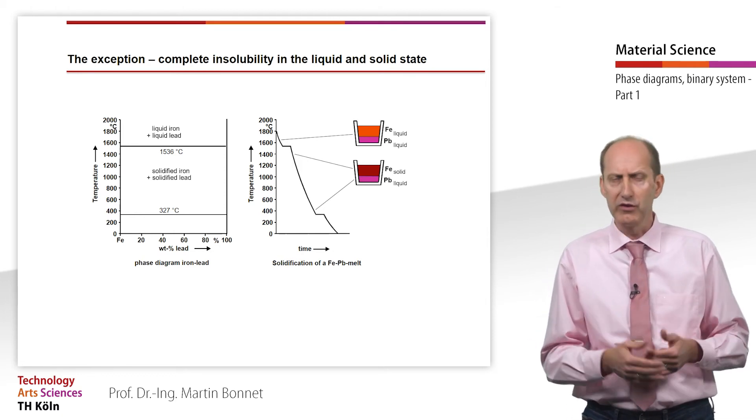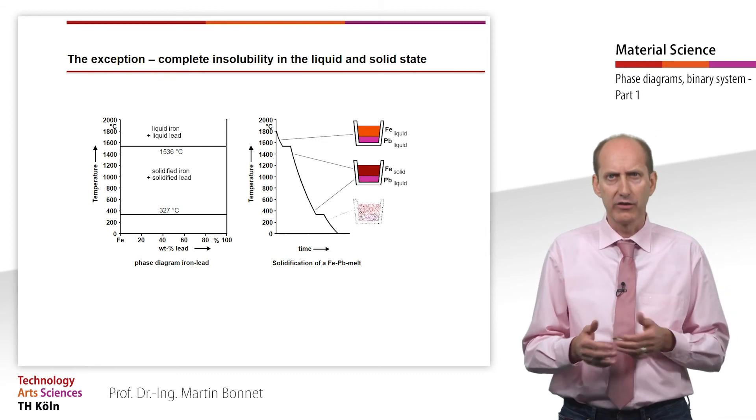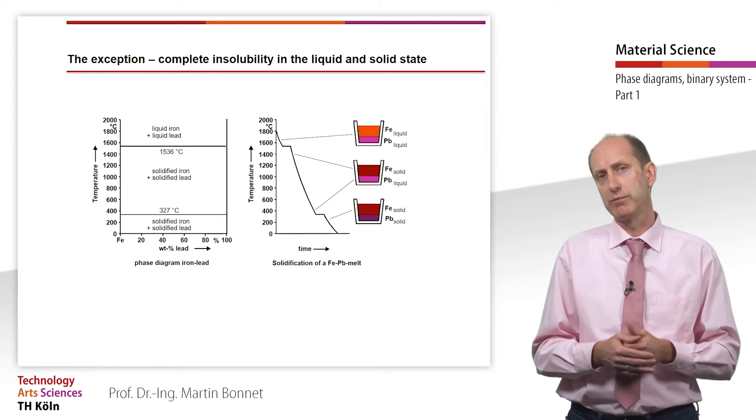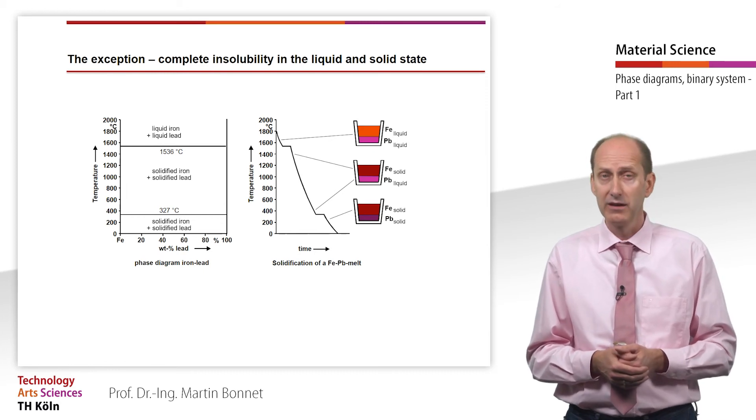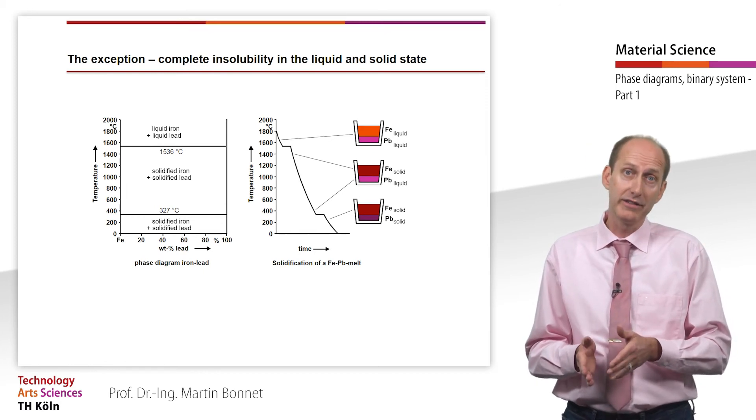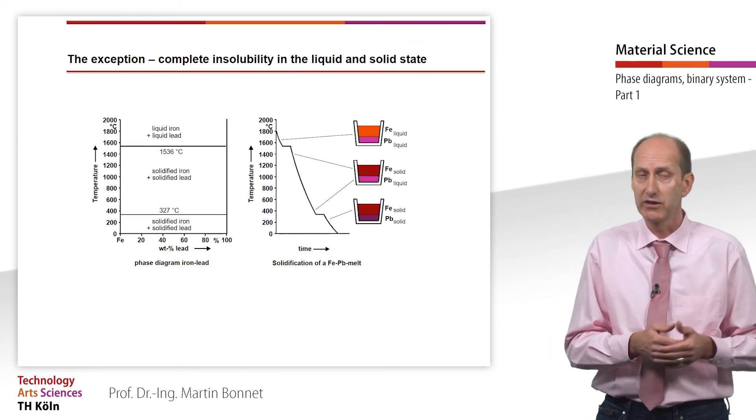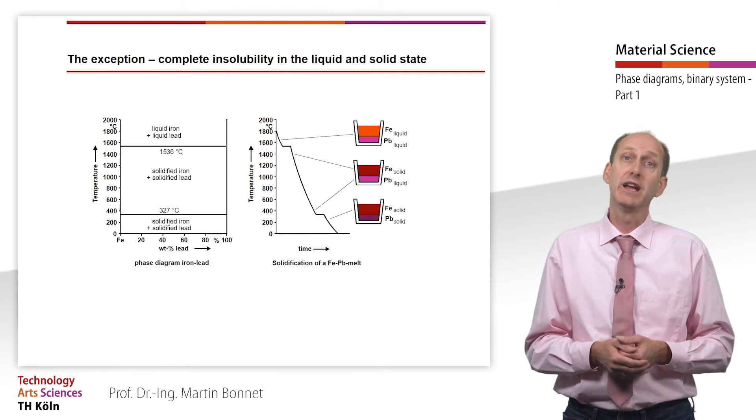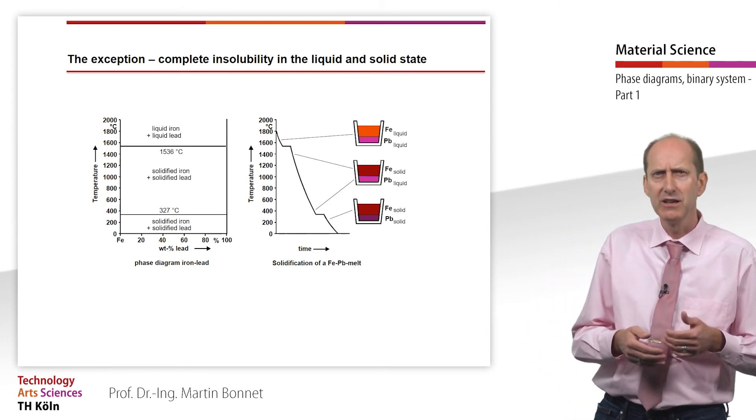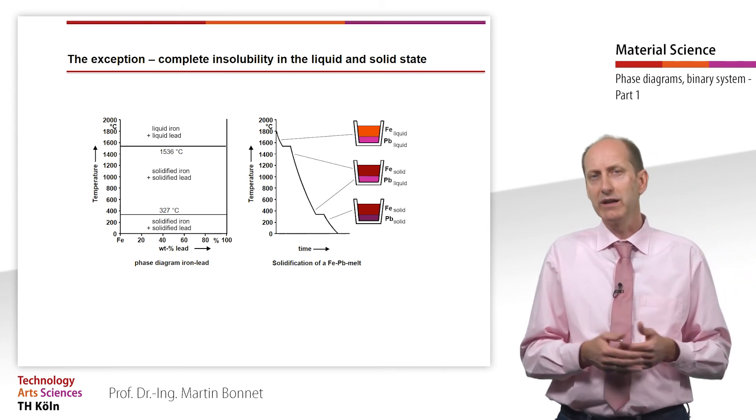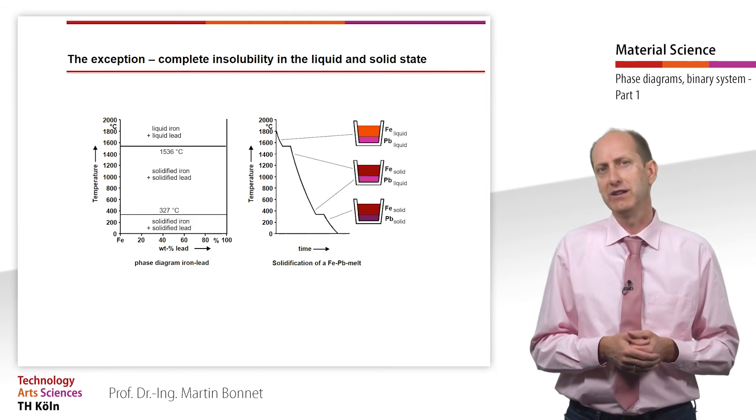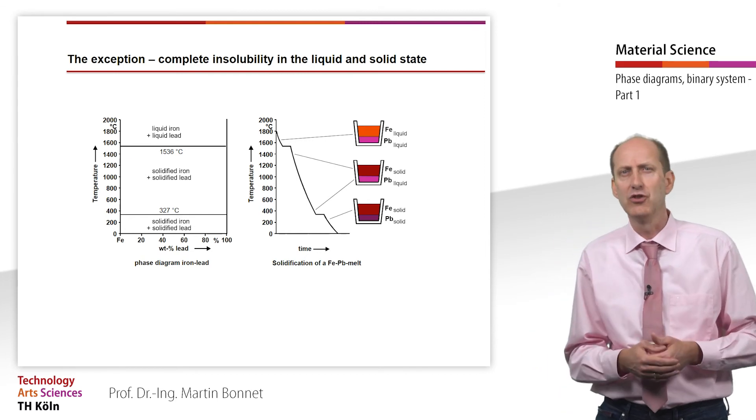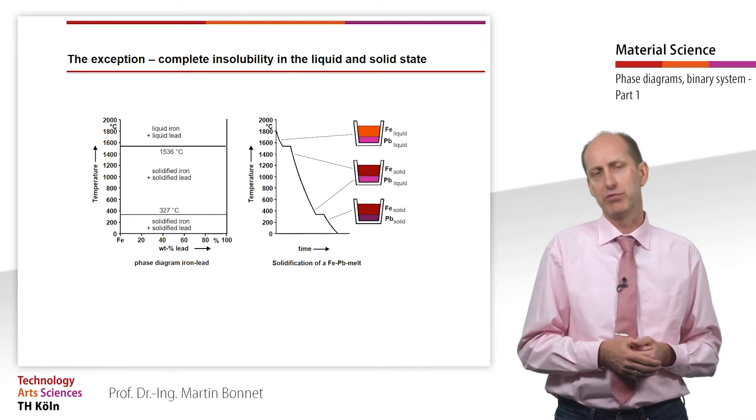Due to a varying mass fraction of lead, the exact characteristics of the arrest points may change, but not their position. Hence, transferring the arrest points into the temperature concentration diagram results in the phase diagram shown on the left. In reality, it is actually very rare that two metals exhibit no solubility at all in the liquid and solid state. Therefore, this case does not play a significant role in practice.